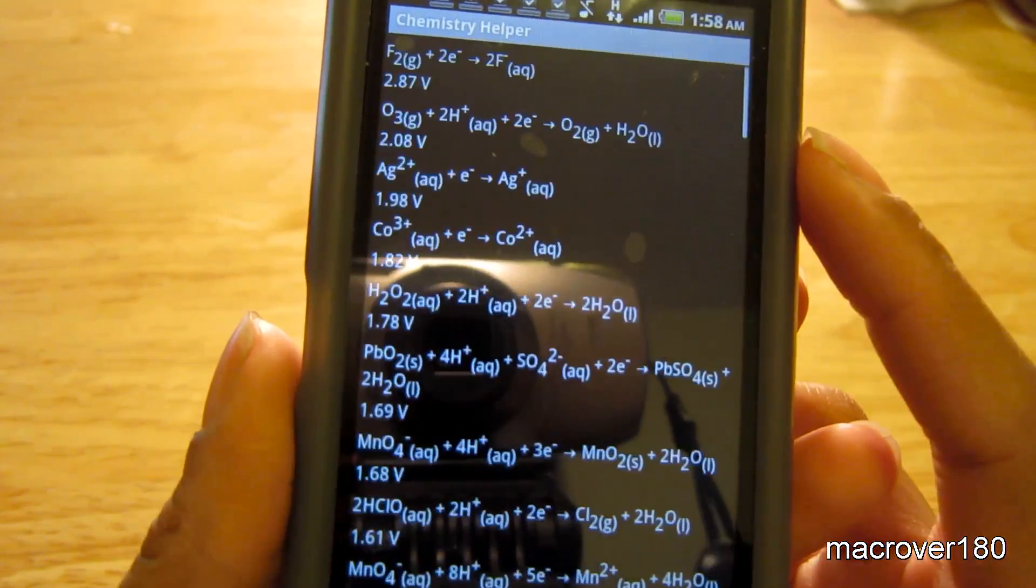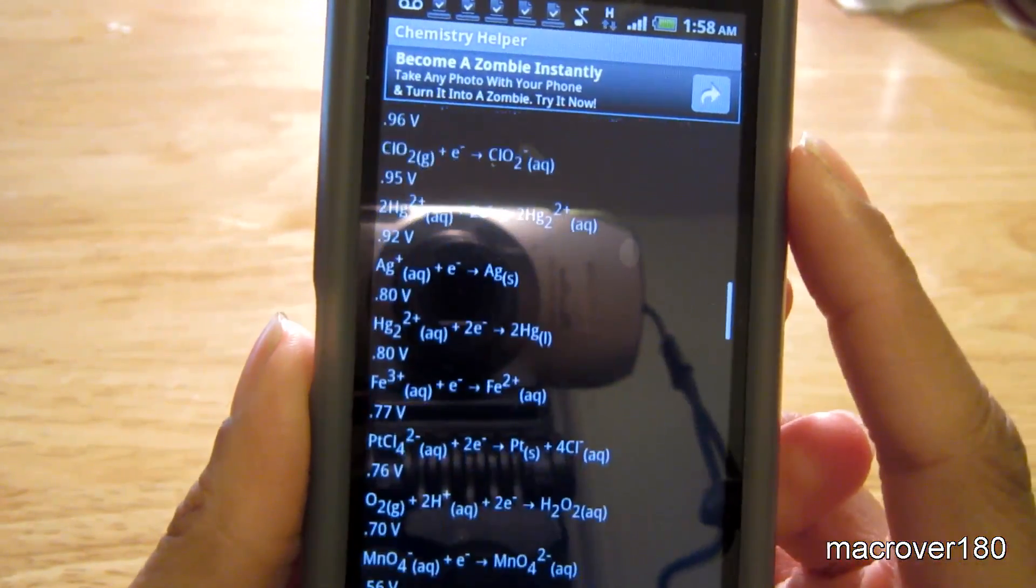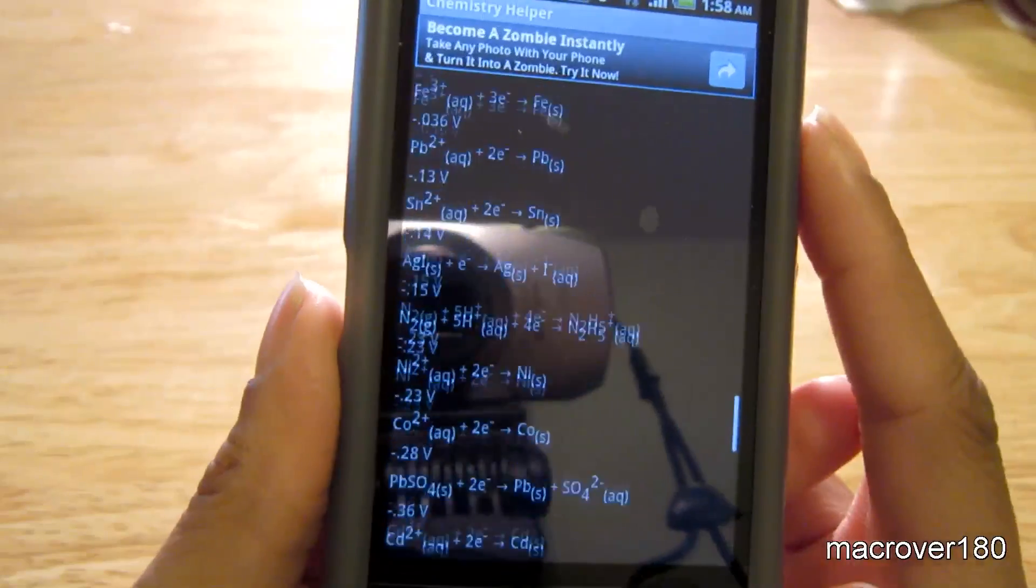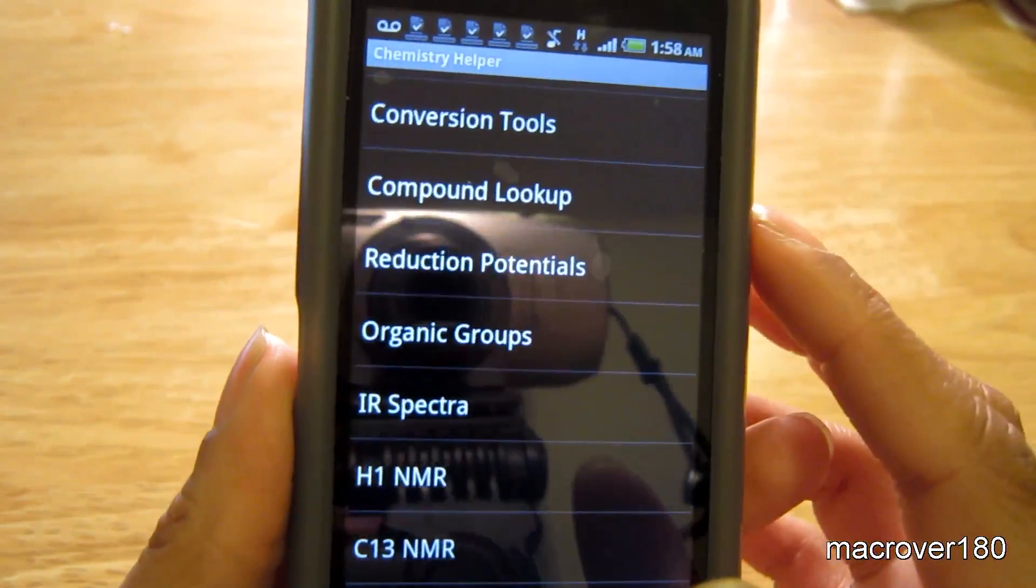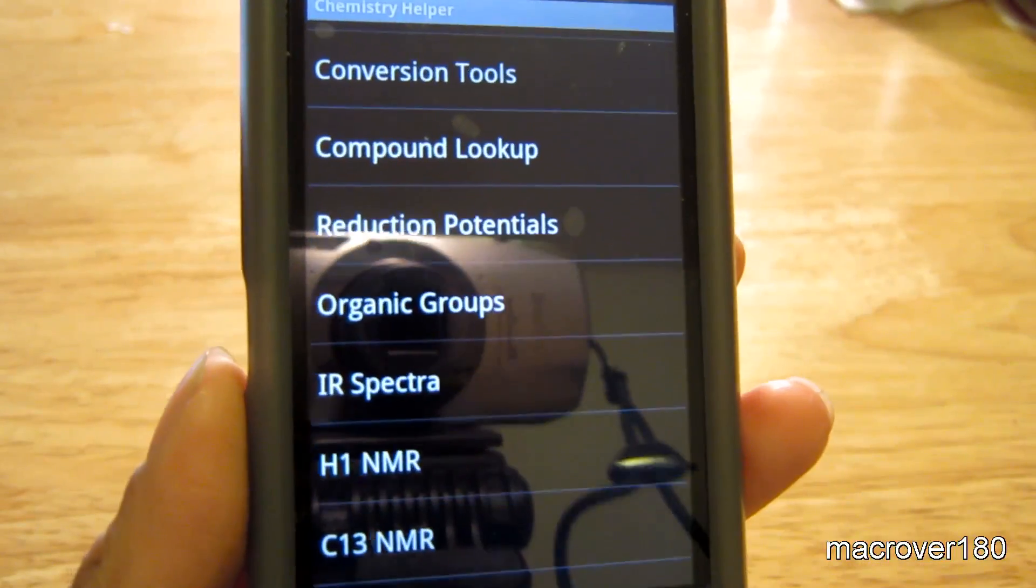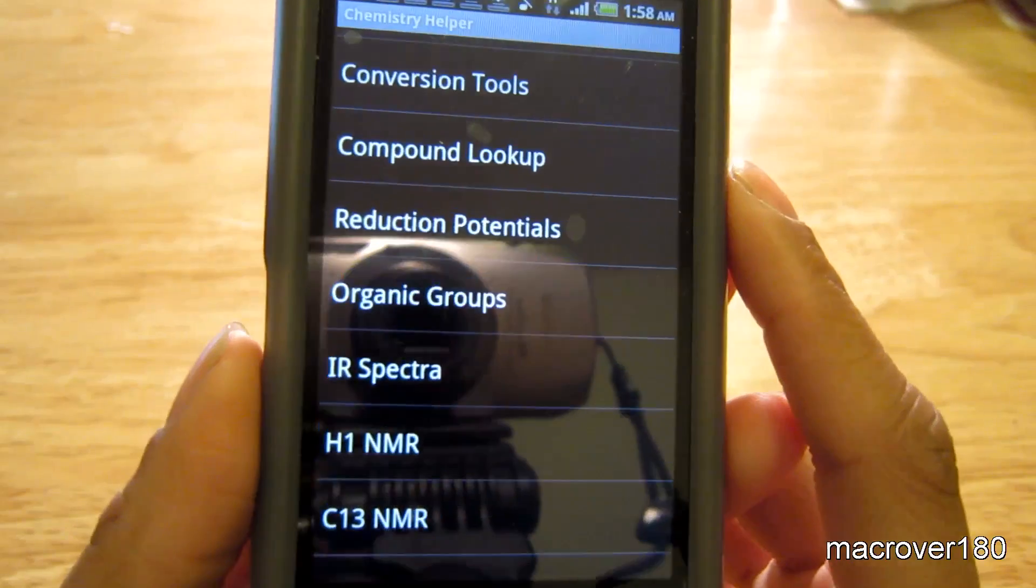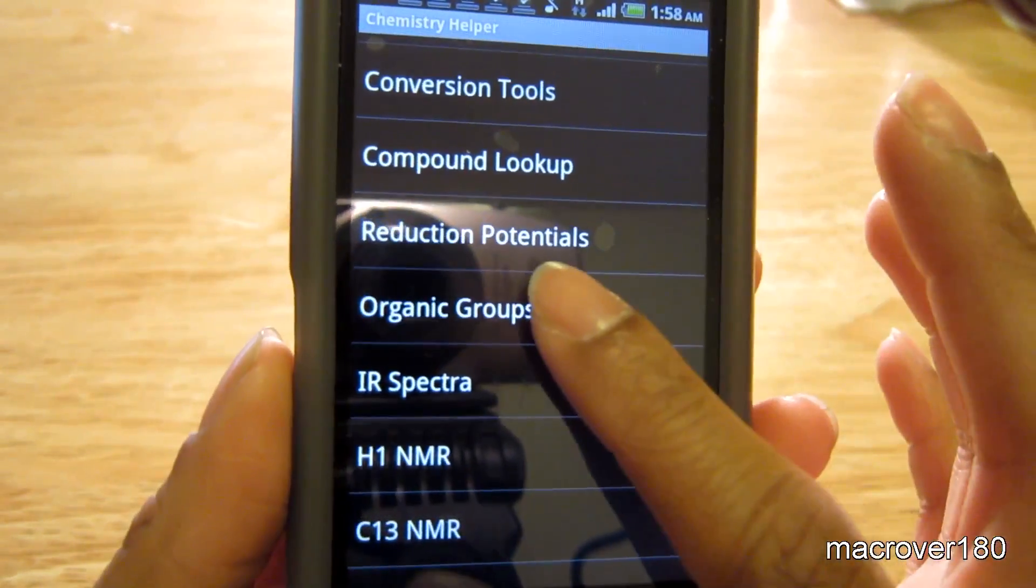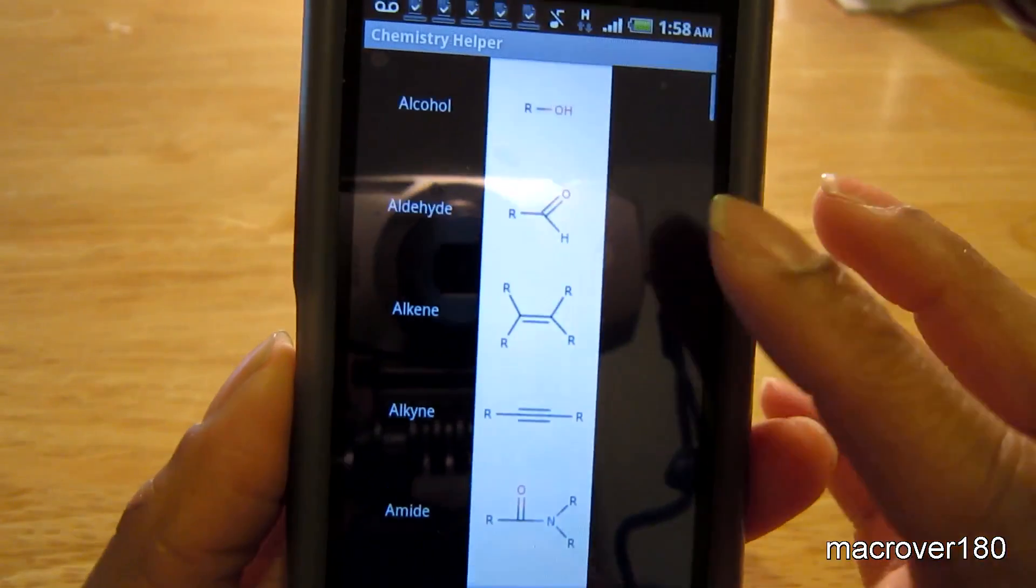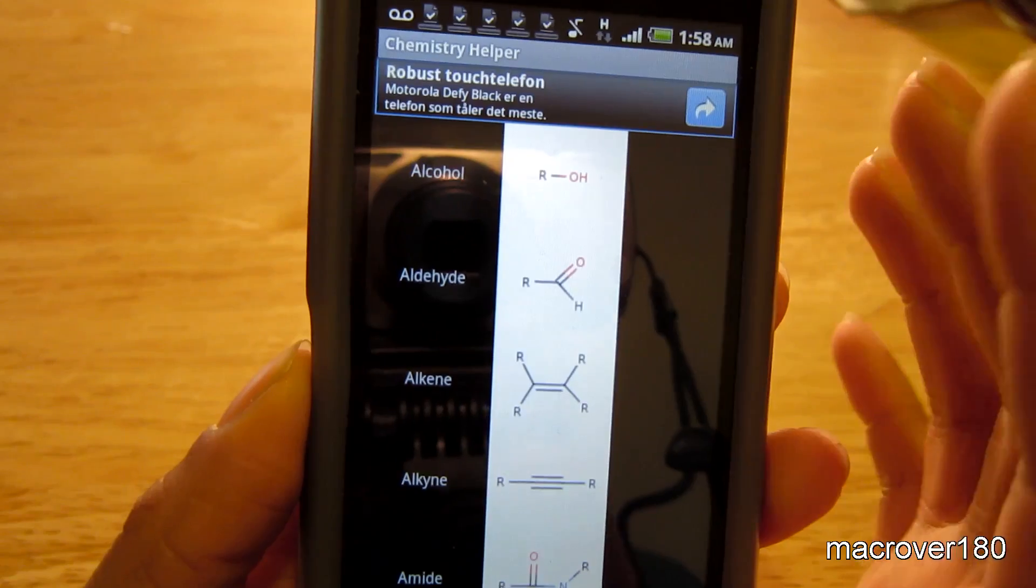You have the reduction potentials listed. So you can kind of see the theme of this being a great reference tool for chemistry students or students that are required to take chemistry. Great reference tool. Organic groups list the famous organic groups.